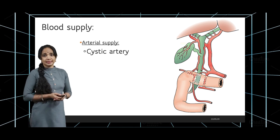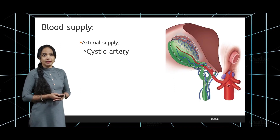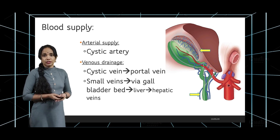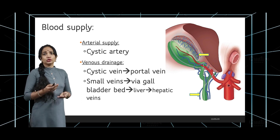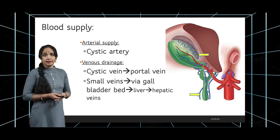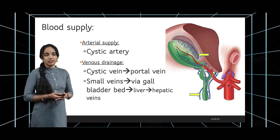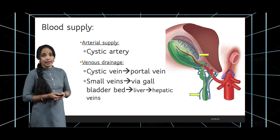The blood supply is from the cystic artery. For venous drainage, there is a cystic vein going into the portal vein, as well as small veins via the gallbladder bed which go to the liver and drain into the hepatic veins — so the venous drainage doesn't actually follow the artery.